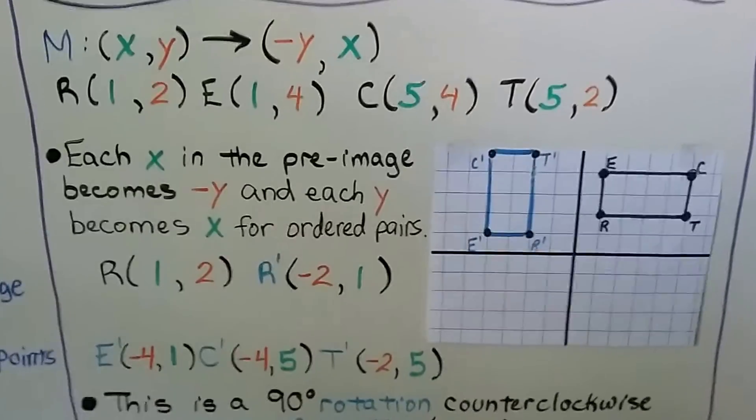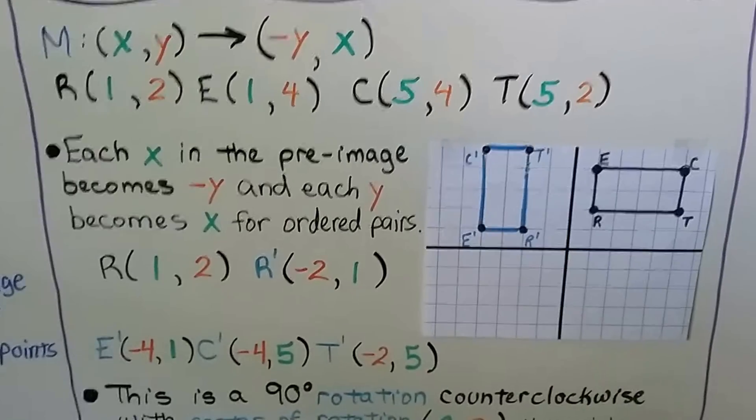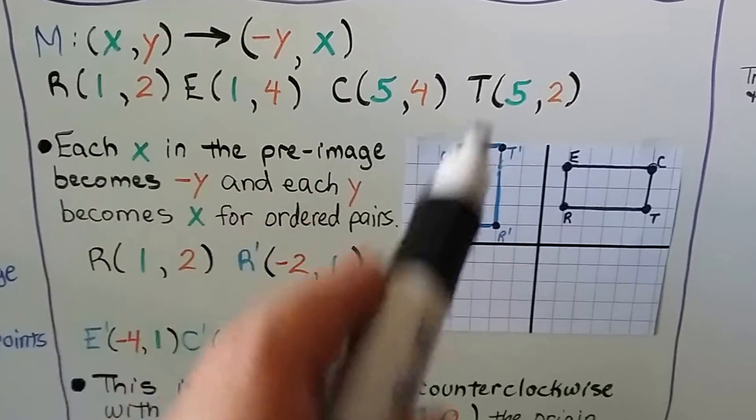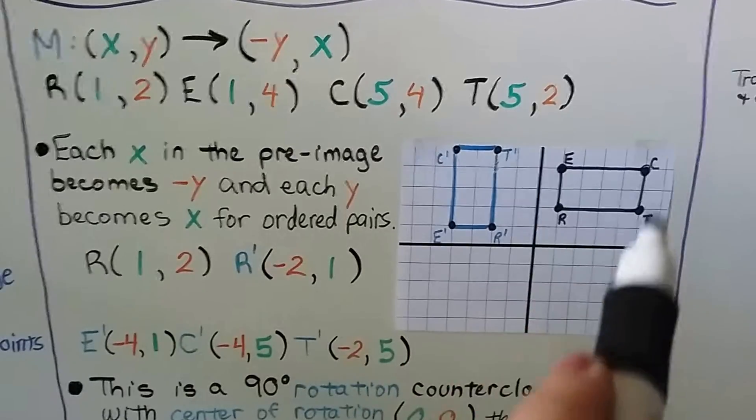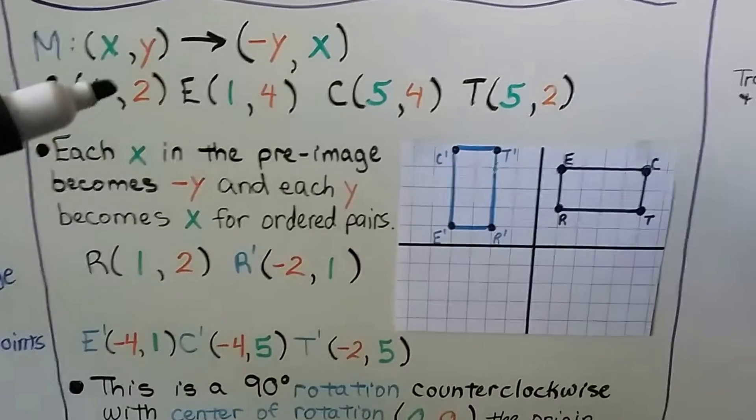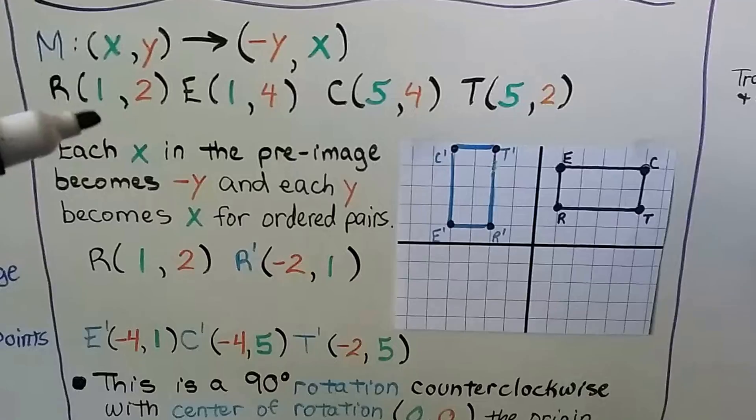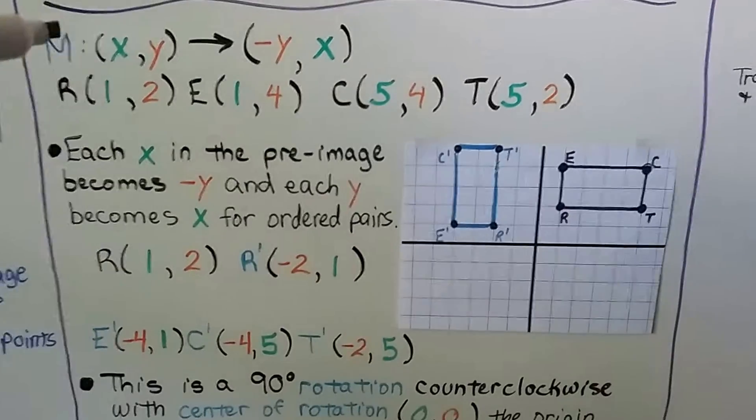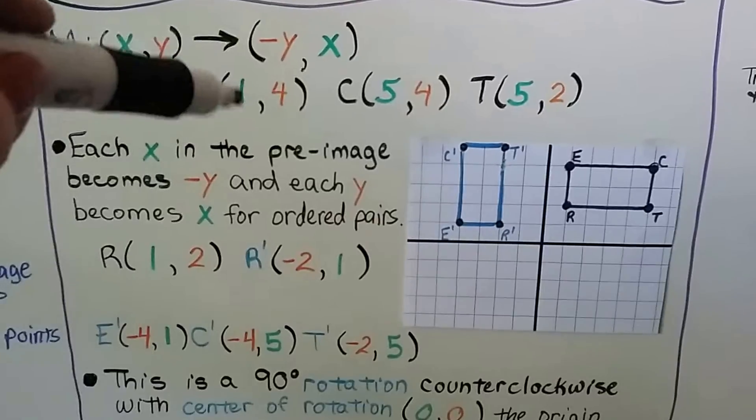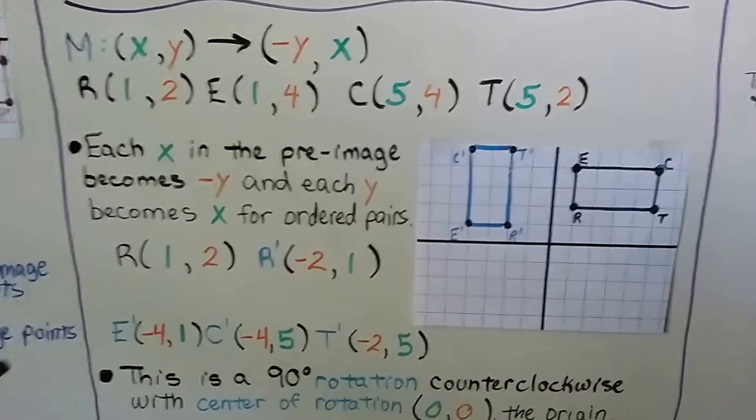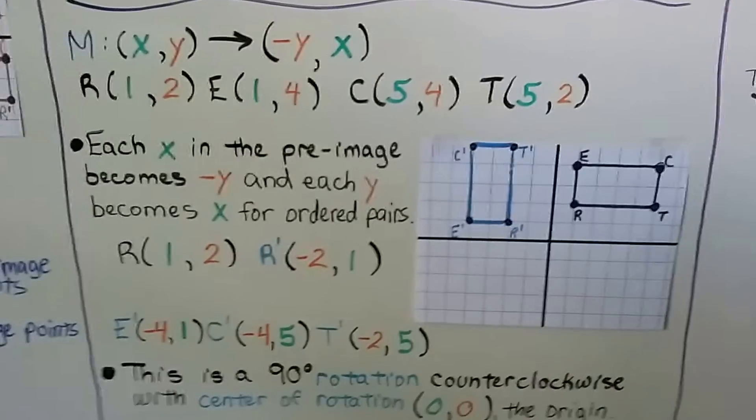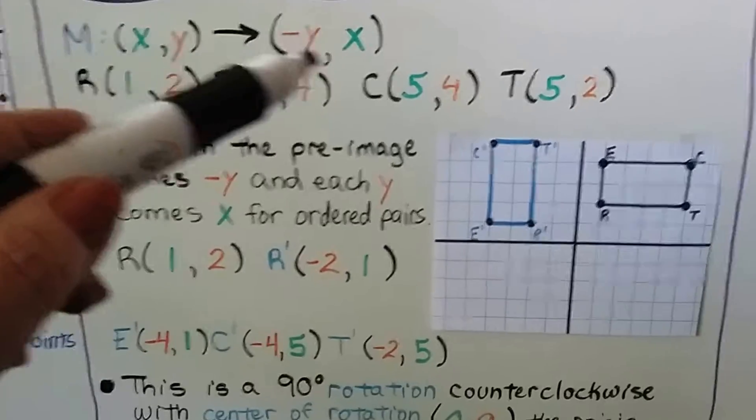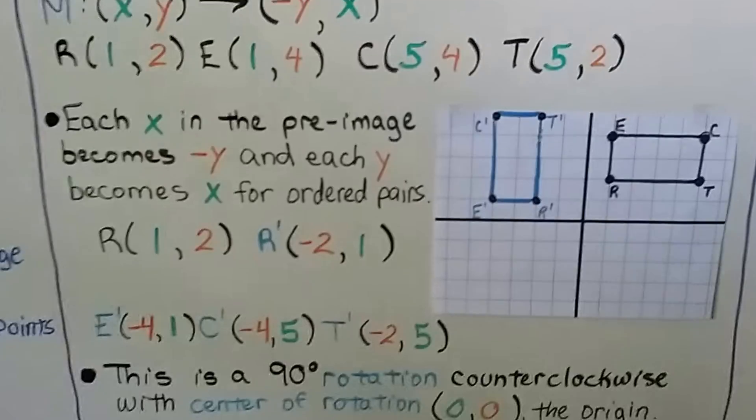For this transformation M, (x, y) is going to map to (-y, x). So here are points R, E, C, T. These are their ordered pairs. Each x in the preimage, each of these x values in the preimage becomes a negative y, and each y becomes x for our ordered pairs. So it tells us we need to swap these, and then that's going to be a negative.